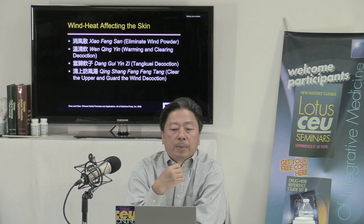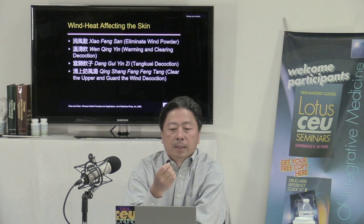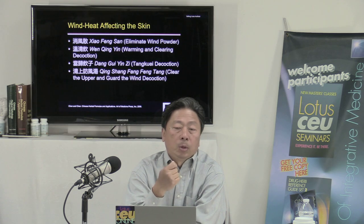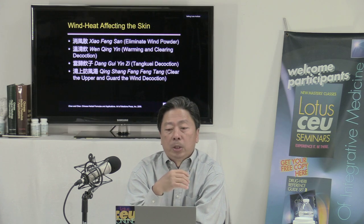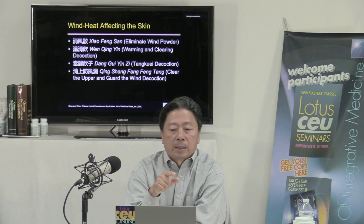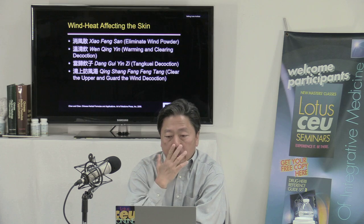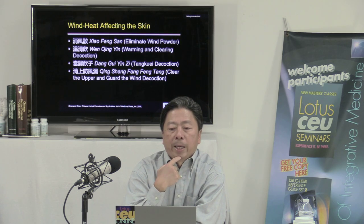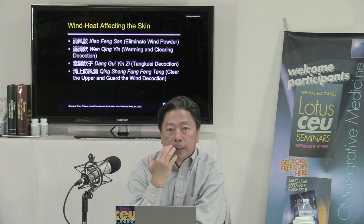The best treatment is no treatment at all — meaning if you can identify the allergen, try to avoid it. But if you're already exposed, the next best thing is to treat the patient symptomatically. One of the most effective formulas is Xiao Feng San, which literally means 'eliminate the wind powder.' This is best for reactions of the skin — eczema, rash, dermatitis. The formula Qing Sang Fang Feng Tang, or 'clear the upper and guard the wind decoction,' is historically for treating wind or wind heat affecting the upper part of the body.